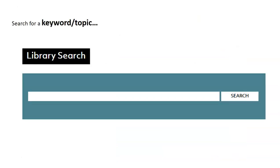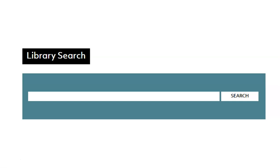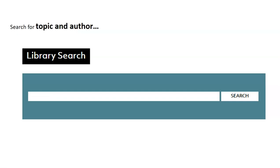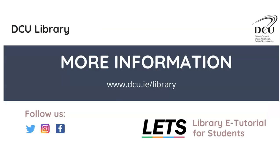In the case that you don't have an exact title, try searching by keyword or topic. Try entering an author name if you know it — enter the full name or just the surname — or you can do a combination of an author and keywords from the title. For more information, visit the library website.